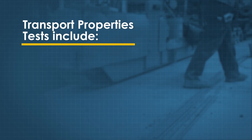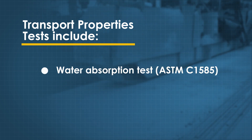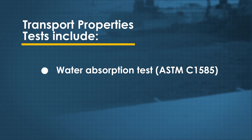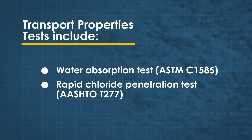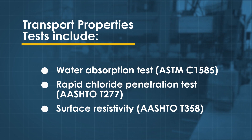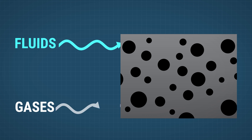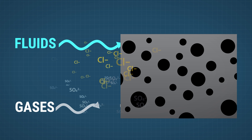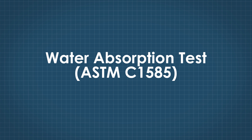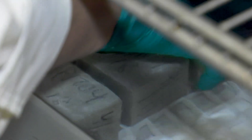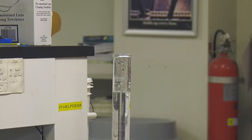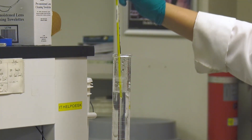Test methods used to assess transport properties in paving concrete include the water absorption test using ASTM C1585, the rapid chloride penetration test using AASHTO T277, and surface resistivity using AASHTO T358. The transport of fluids and gases into concrete impacts durability, as all material-related distresses involve the transport of moisture and other substances such as chloride ions or sulfate ions into the concrete. The water absorption test measures the degree and rate of water absorption into a conditioned concrete sample at specified intervals for a minimum of eight days, and can be used to compute the degree of saturation.